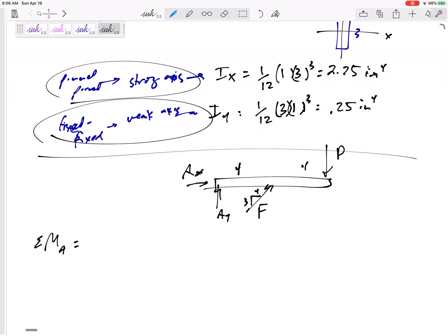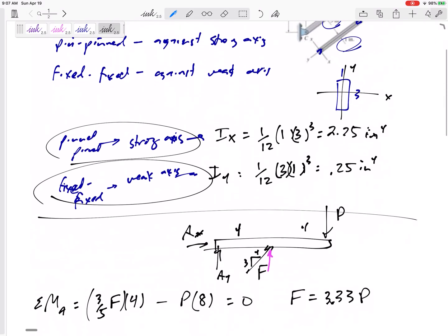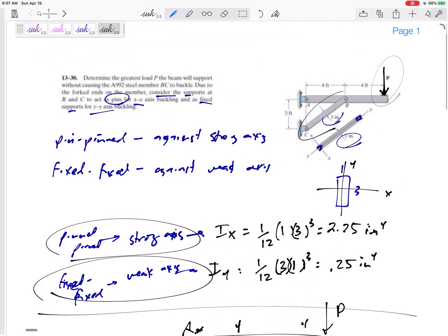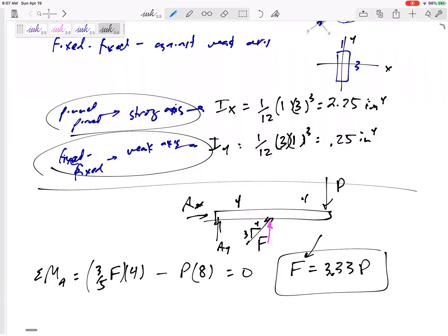By summing the moments about A, AX goes straight through it, AY goes straight through it, the four-fifths component goes straight through it. But the three-fifths component of F is acting four feet away, creating a positive moment. And P is acting eight feet away. The axial force inside of the column that I'm interested in is 3.33P. I like to do my statics first and write it in terms of P.